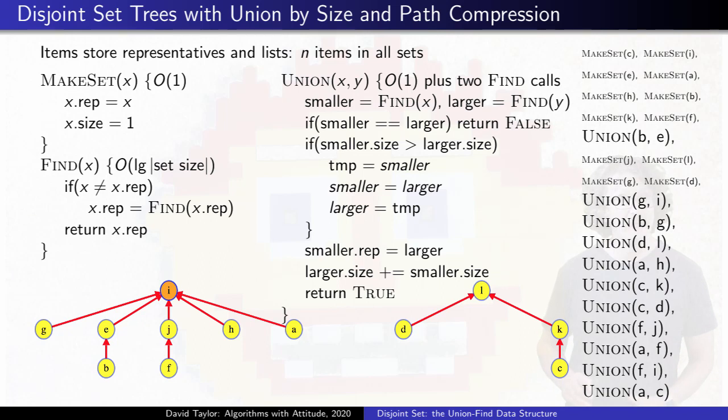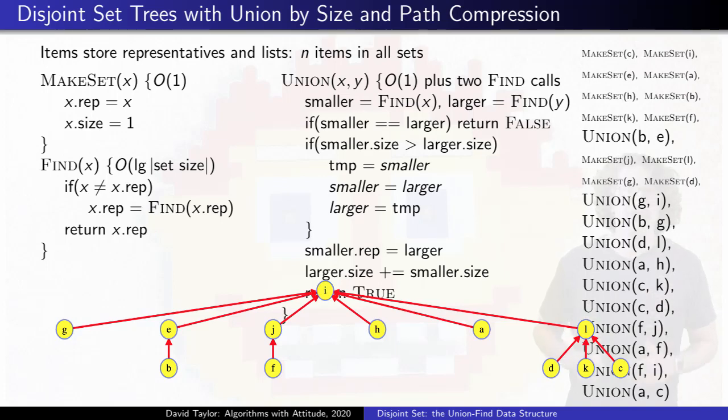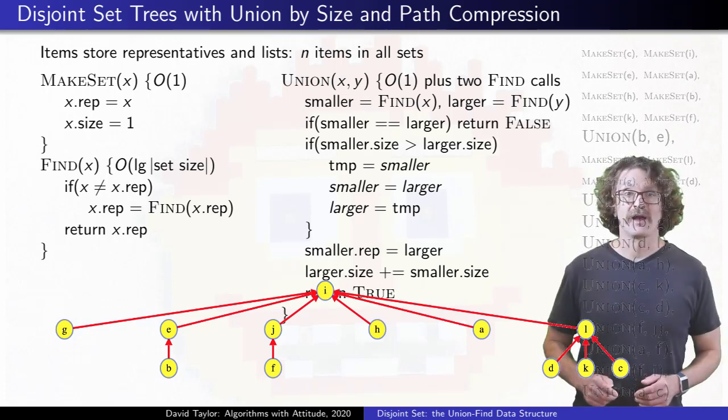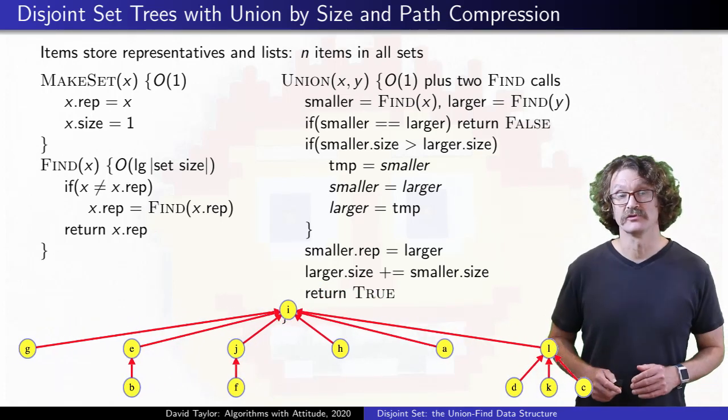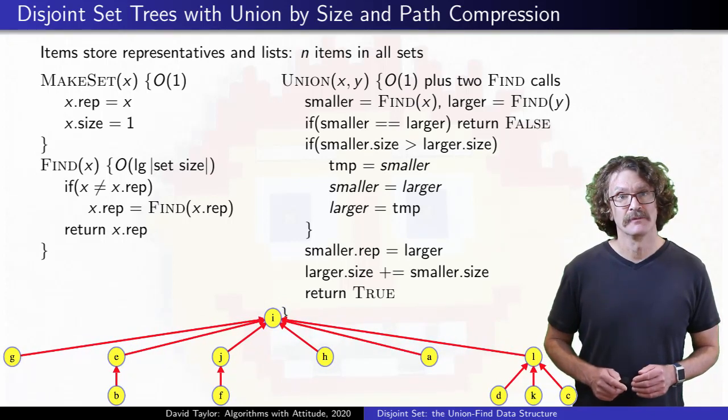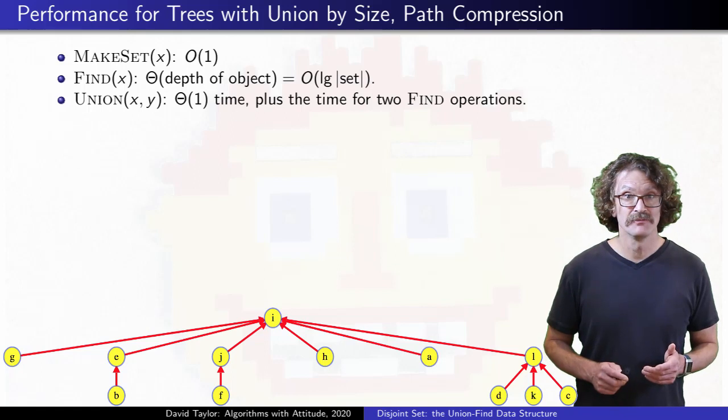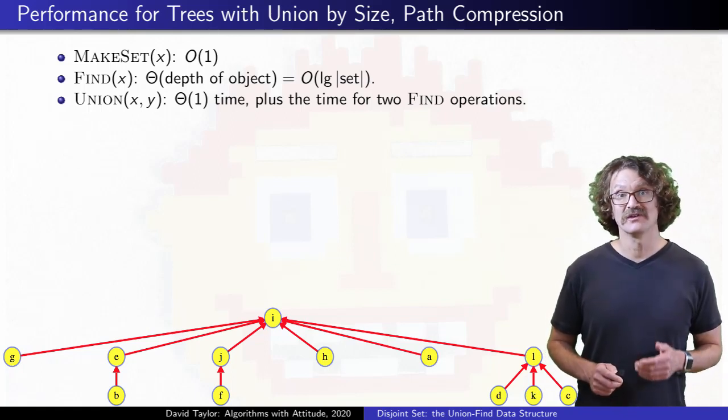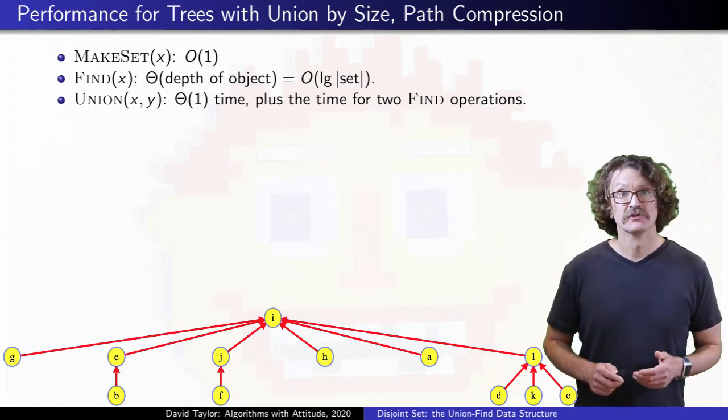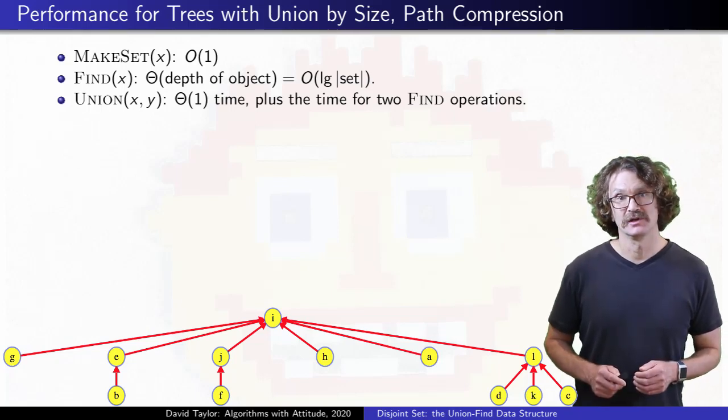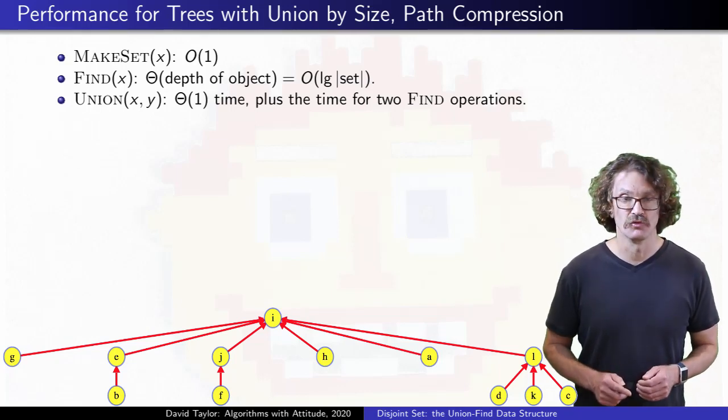Trees can still get to be logarithmic in depth, but for that to happen, you have to keep taking the union of roots, or something near the root. FIND takes time proportional to the depth of the node, so those unions are really quick. Basically, to get a FIND operation that takes log time, you have to first get a whole bunch of unions and FINDs that are fast, so the average time per operation will be much better than logarithmic.